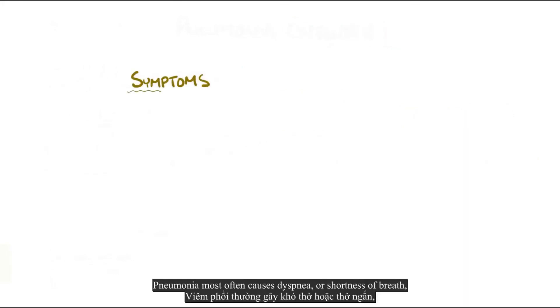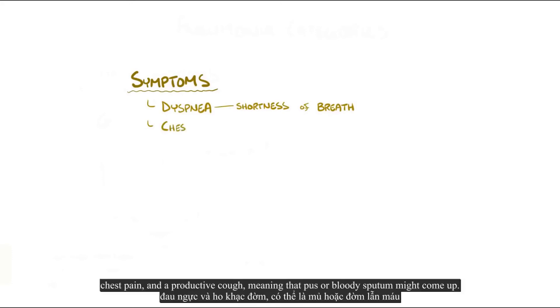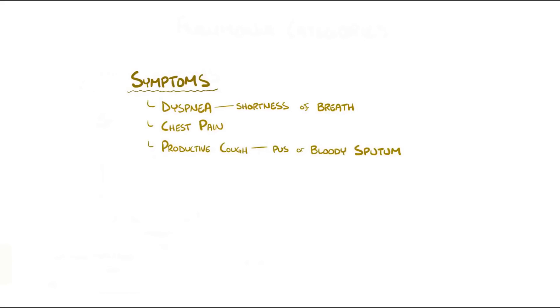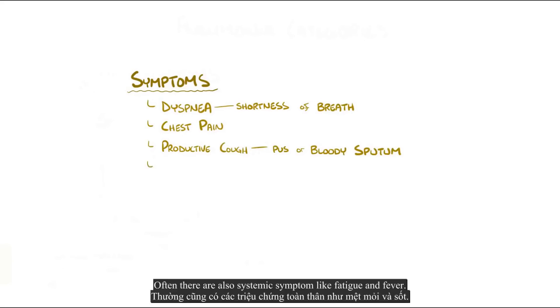Pneumonia most often causes dyspnea, or shortness of breath, as well as chest pain and a productive cough, meaning that pus or bloody sputum might come up. Often there are also systemic symptoms like fatigue and fever.